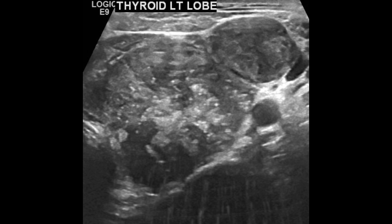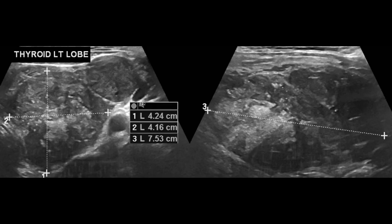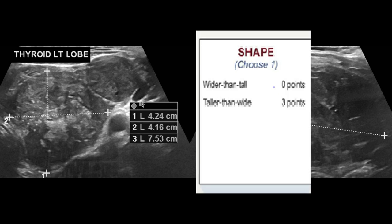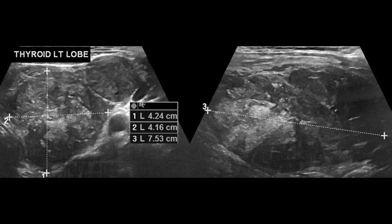Now we move to the shape. We can tell from this image that this nodule is taller than wider. When we measure the AP diameter and compare it with the width, the AP diameter was greater at 4.2, so we will give it three points as it is taller than wide.